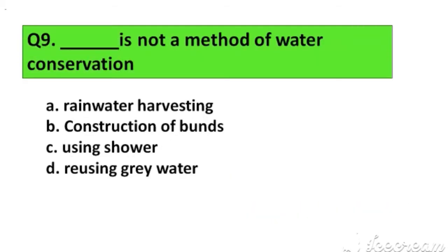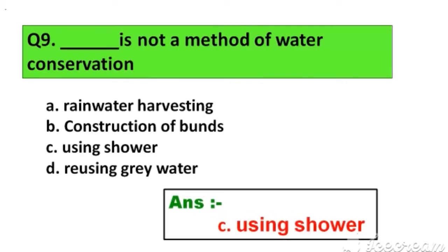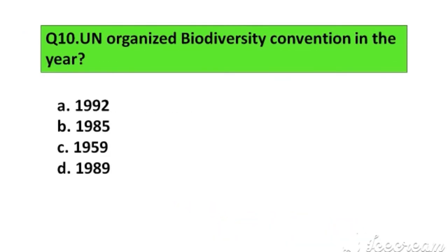Question number 9. Which is not a method of water conservation? Option A. Rainwater harvesting, B. Construction of bunds, C. Using shower, D. Reusing grey water. The right answer is Option C. Using shower.